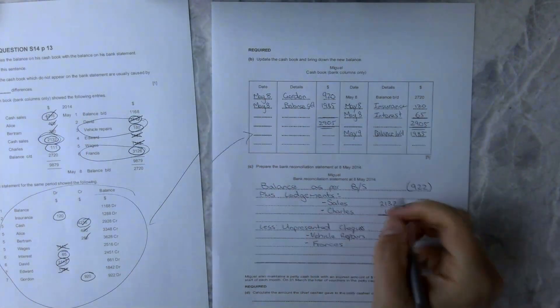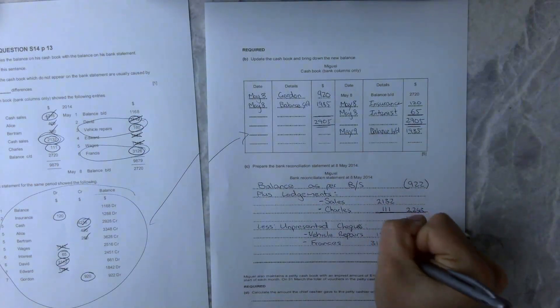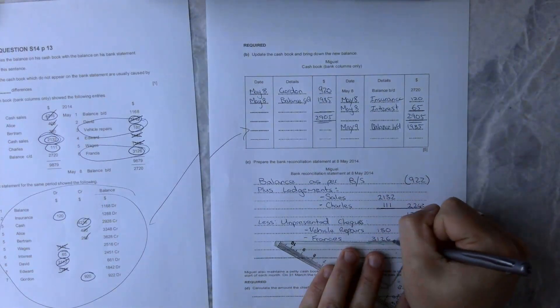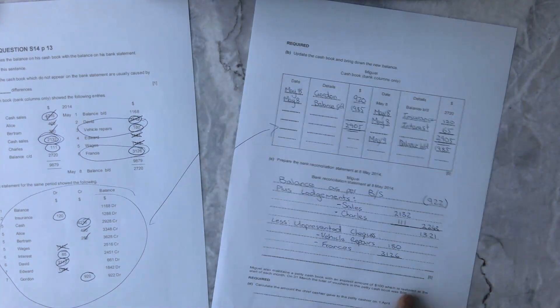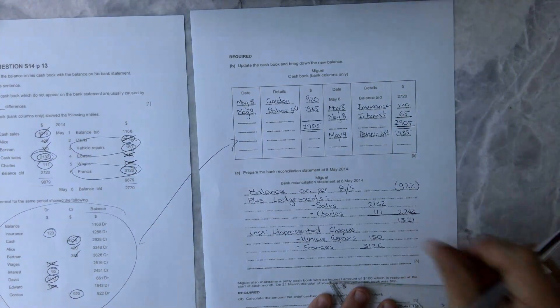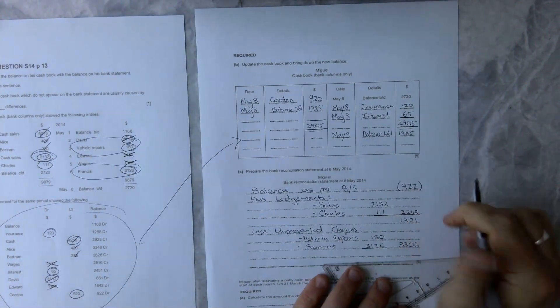It's going to minus us off because these are checks that we've sent but they haven't gone through our bank yet. These are checks that have been sent to the people but we haven't received them. The bank hasn't taken money out of yet. That is going to be a total of 3,306.